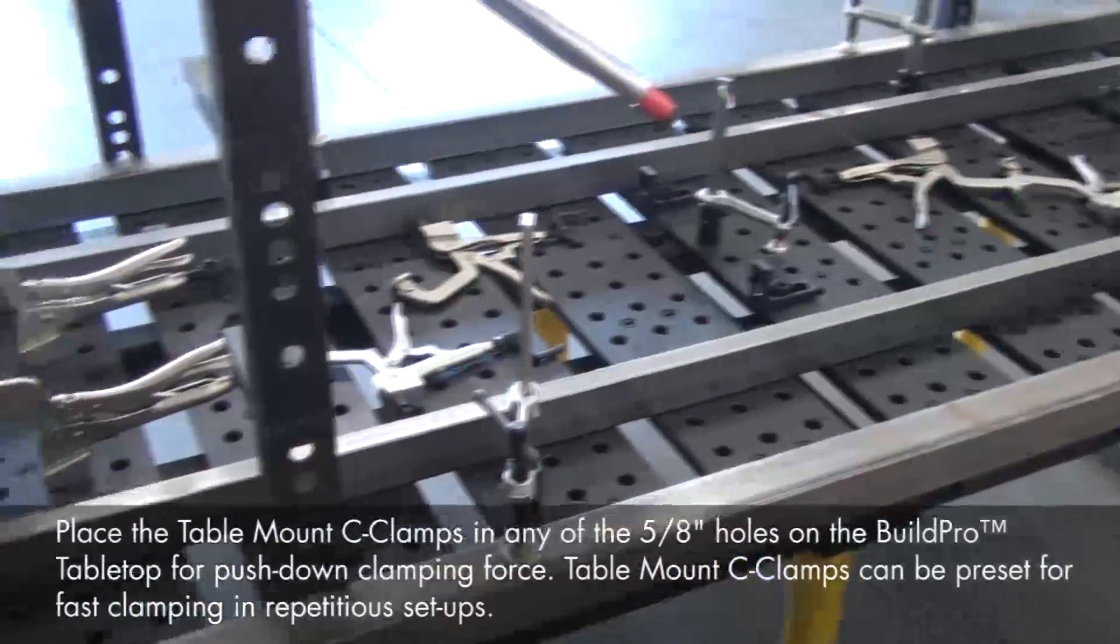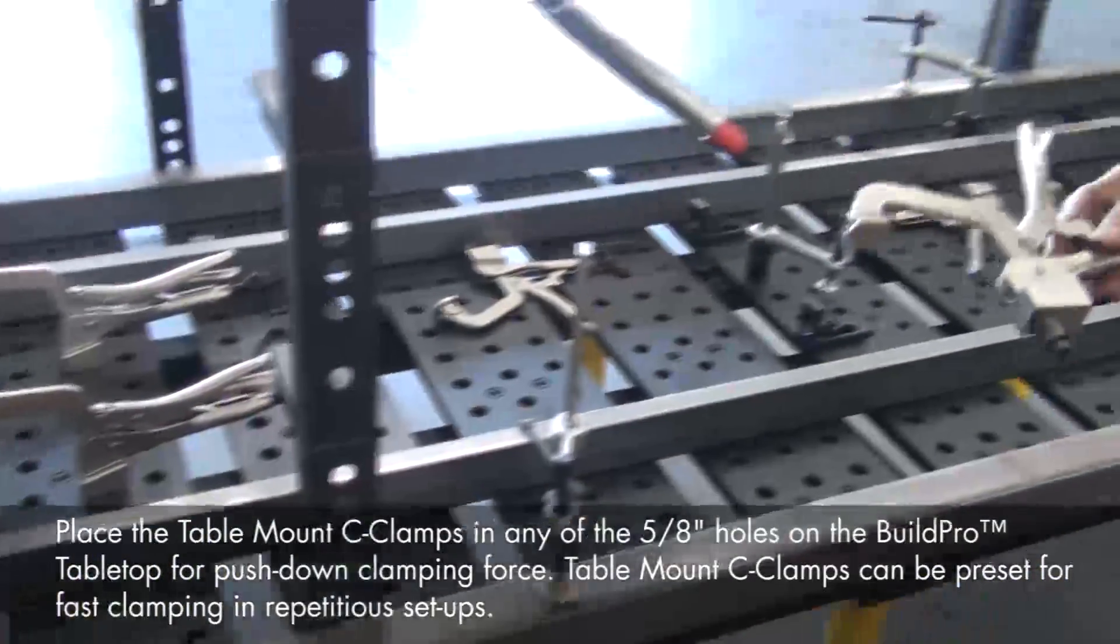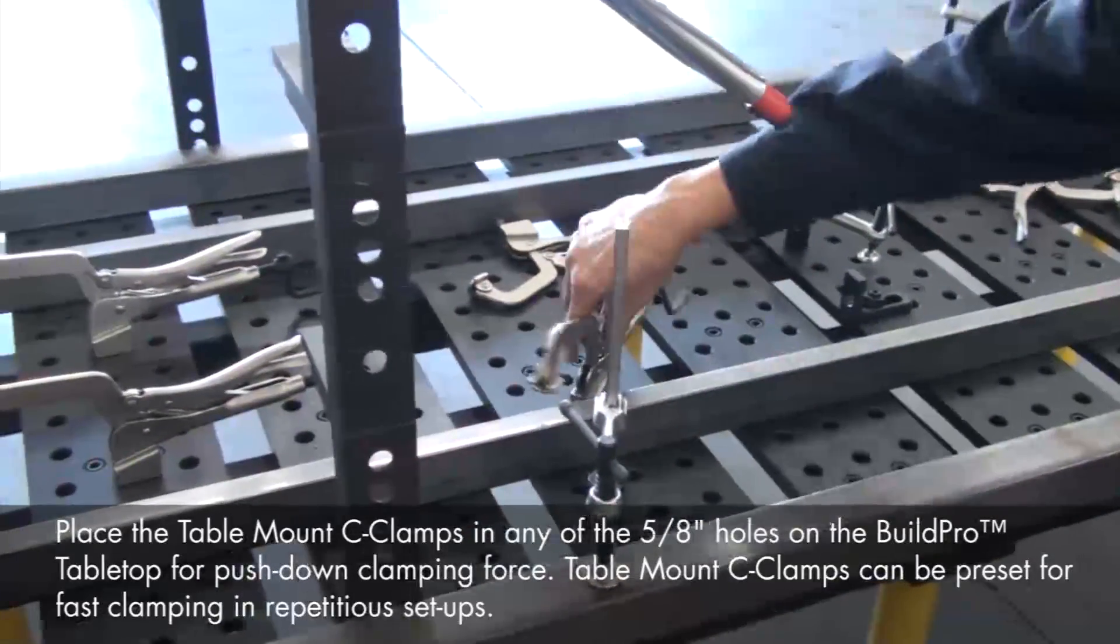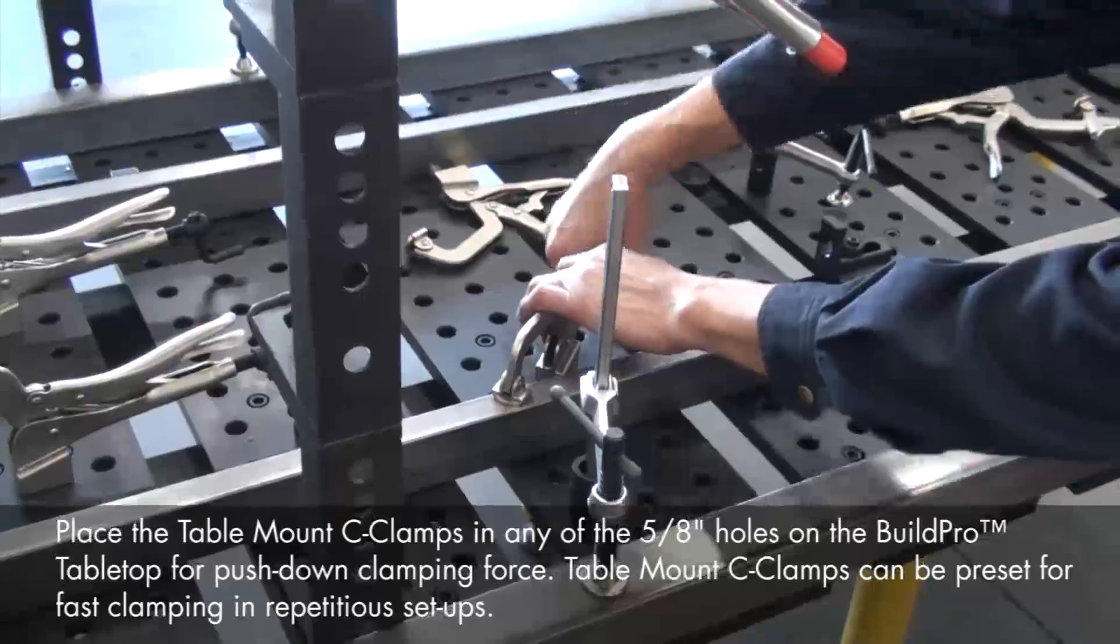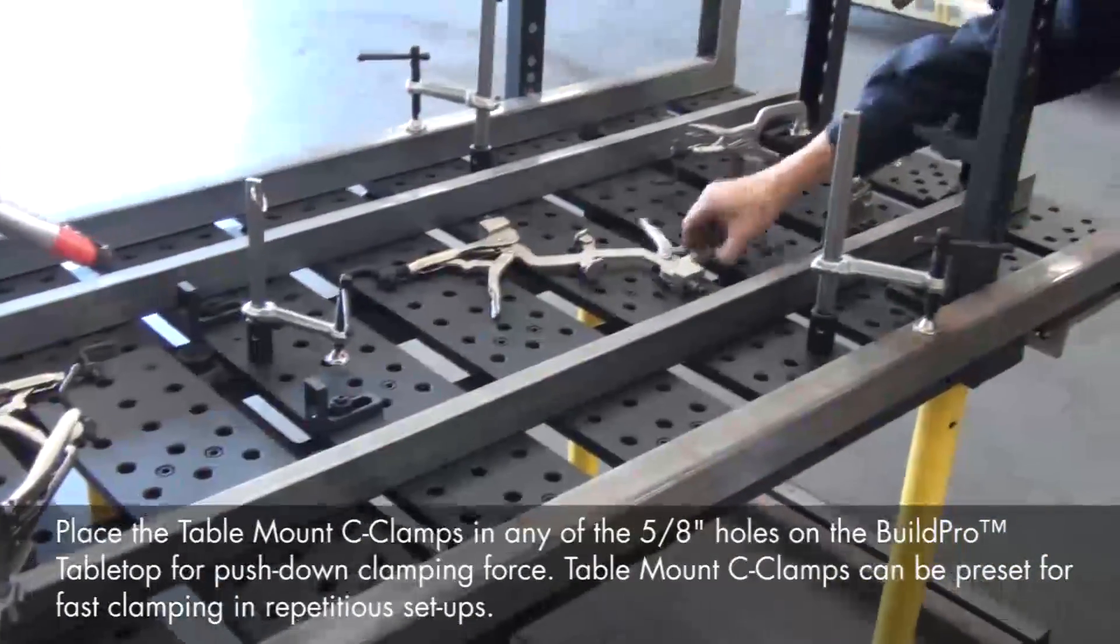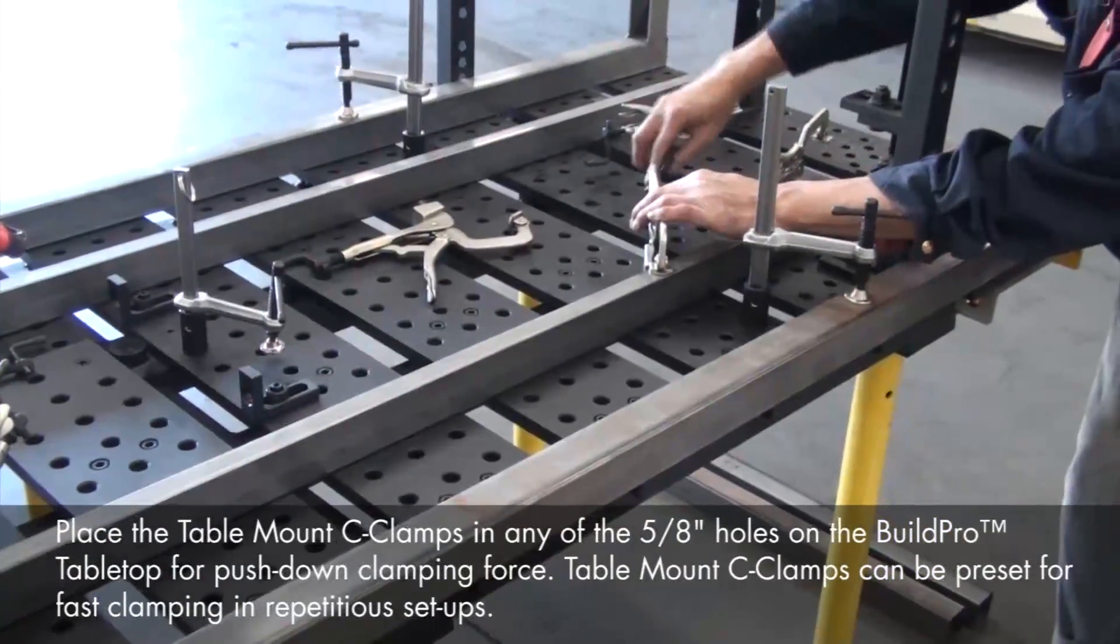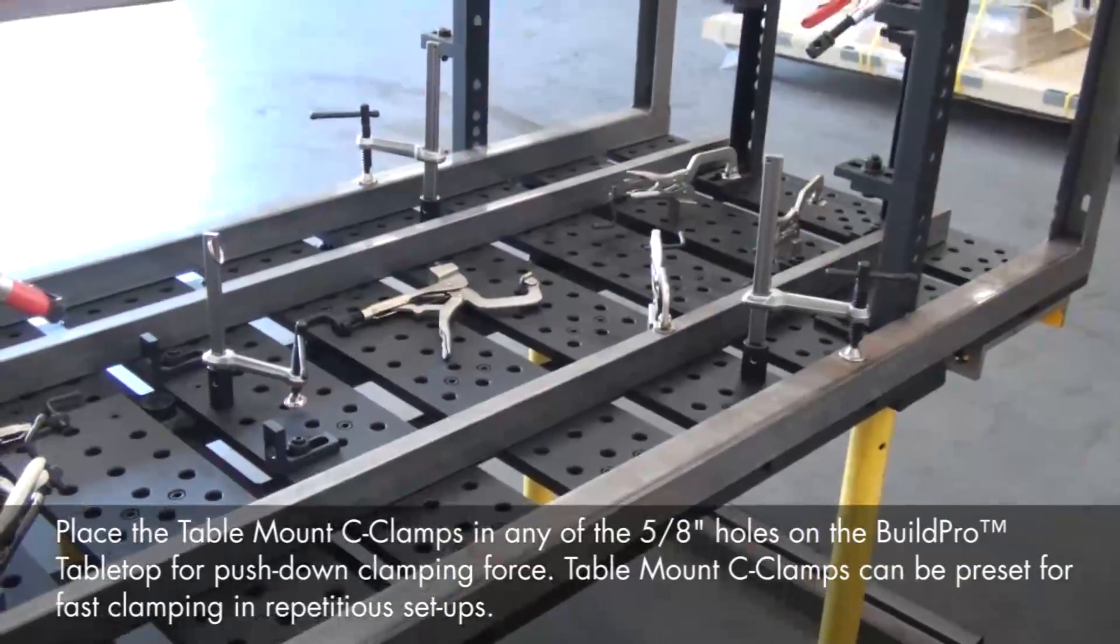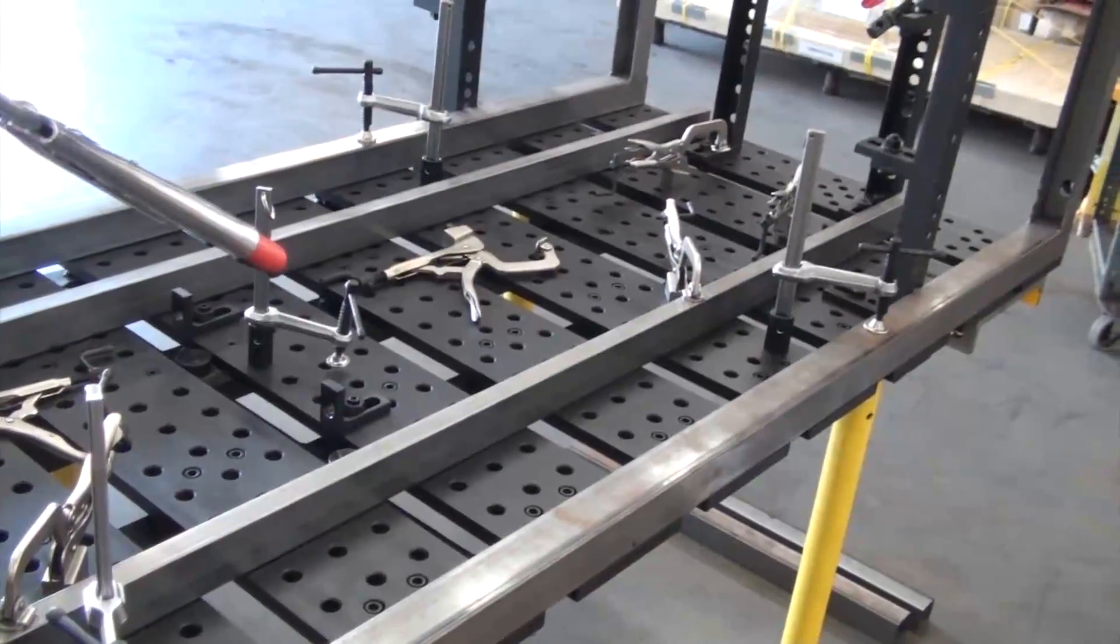With these spine tubes located, we'll clamp them down using the table-mount C-clamps. These C-clamps fit right into the 5/8 holes on the tabletop, so we just insert, lock down, and tighten. We'll use the crank handle to easily adjust the torque. We've preset all of the table-mount C-clamps for this assembly, so we'll be able to clamp down these spine tubes very quickly.